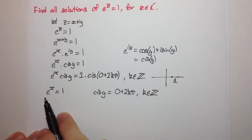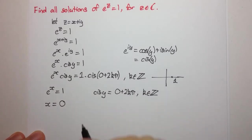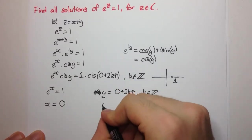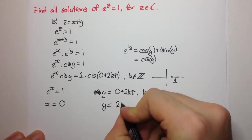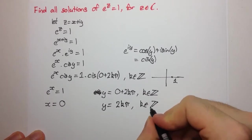Now, this we can solve quite easily by taking the natural log of both sides, and we're going to get that x is equal to 0. And here, oh, this should be just y, not cis. So we're going to have y is simply equal to 2kπ, where k is an integer.